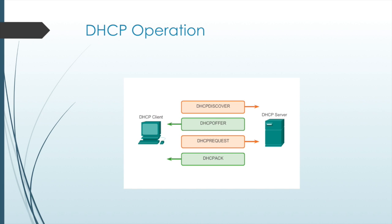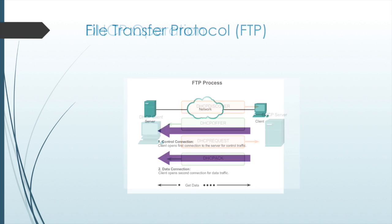The File Transfer Protocol was developed to allow data transfers between a client and a server. FTP requires two connections between the client and the server: one for commands and replies, and one for the actual file transfer. The data transfer can happen in either direction — the client can download data from the server or upload data to the server.